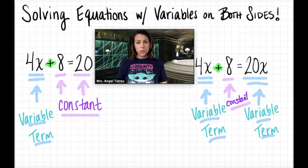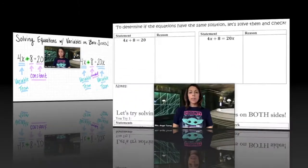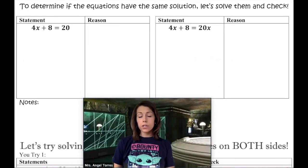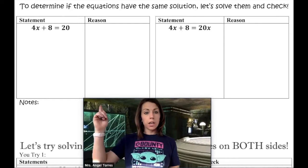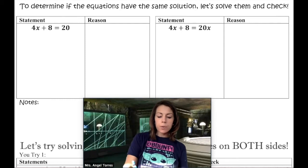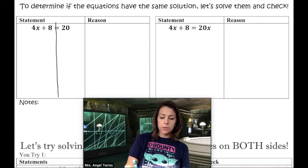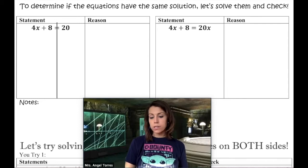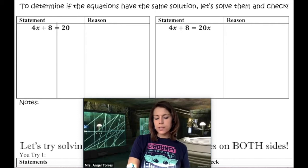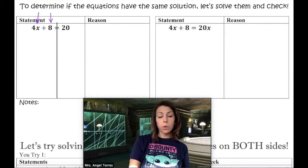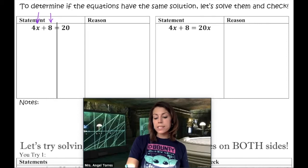Now that we've gone over some vocabulary, let's grab our notes and get started. We've done some comparing and contrasting with these two equations, so let's go in and solve them. Starting with equation one, the first thing I always do is put a line down the middle of my equal sign to keep the two sides separate. The left side has two terms — 4x and 8 — and the right side only has one term.